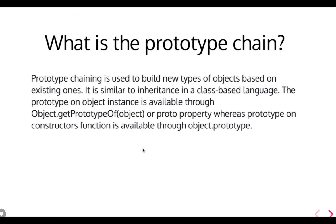What is a prototype chain? This question has two different aspects. There are different functions we are writing, and you are actually inheriting the properties of one function into another. Function B is inheriting the properties of function A, and function C is inheriting the properties of function B. So this is kind of a prototype chain we are creating. Whenever we try to access some property in function C, it will first check in its local properties; if not found, it will check in the prototypes.